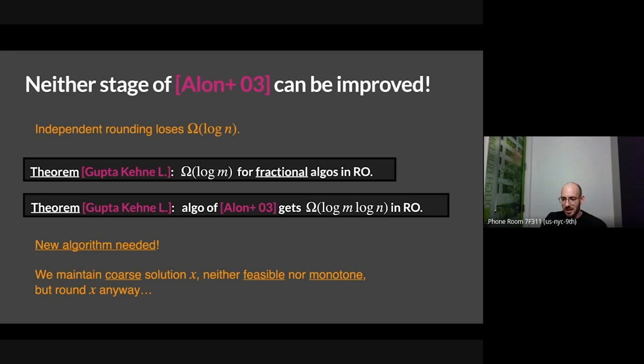What I'm about to show you is a way to maintain something that looks kind of like an LP solution, except it's a coarse solution — it's not a legit feasible solution, nor is it monotone. And yet you can get away with rounding this thing over time and get the bound I'm claiming. This might look a little mysterious, but hopefully I'll elucidate in a few slides.